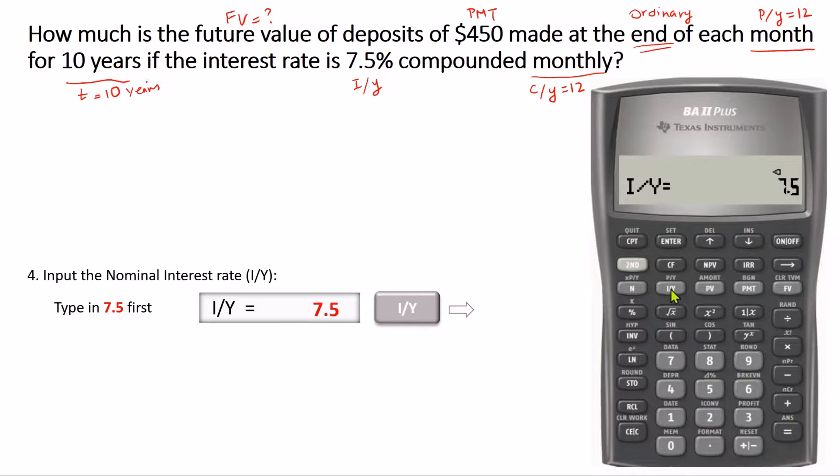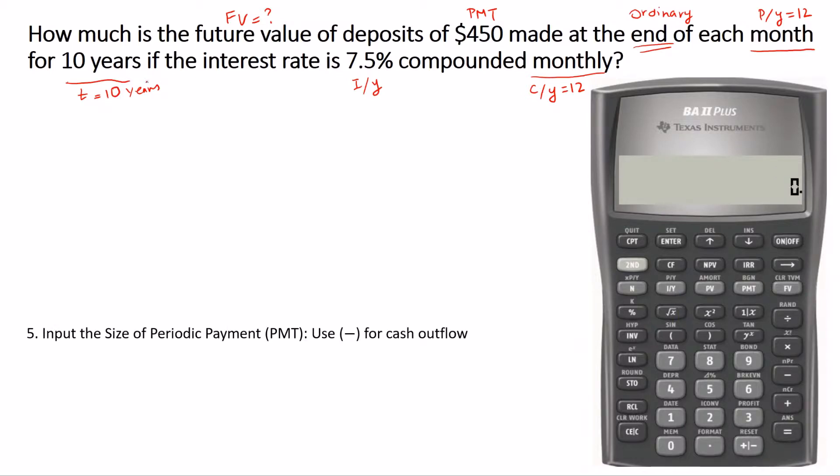Next we enter the payment. The size of periodic payment is $450. Because it's investment and $450 is cash outflow, it should be entered as a negative number. So in order to change the sign, we use this positive negative sign key and then press PMT.